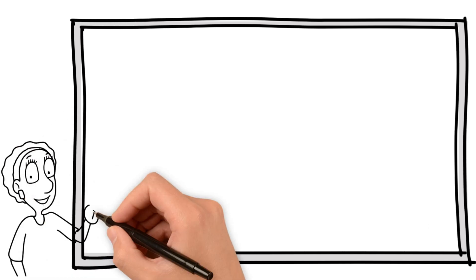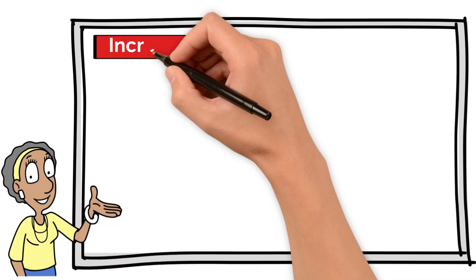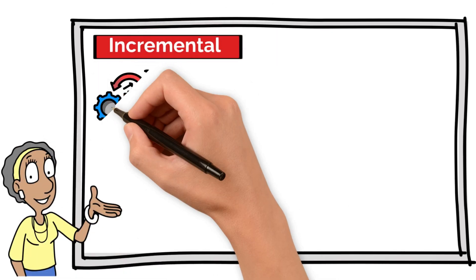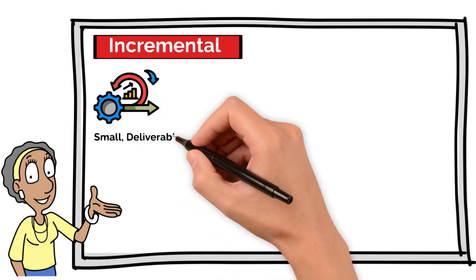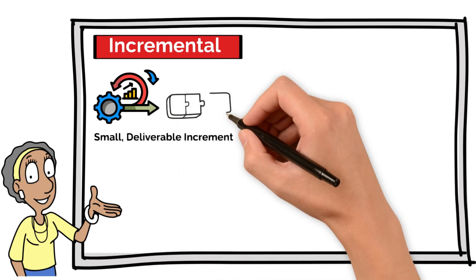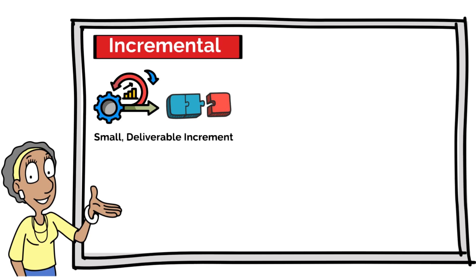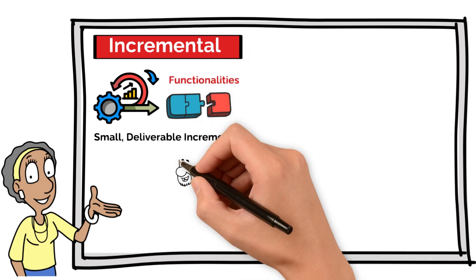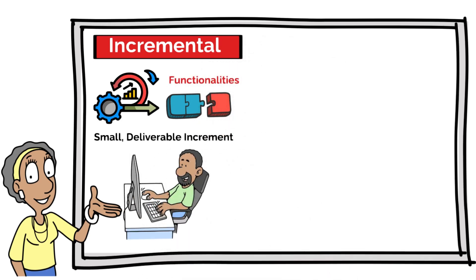Alright, first things first, let's define what each of these models is all about. With the incremental model, the project is divided into smaller, deliverable pieces called increments. Each one adds a fully functional piece to the final product, so as you progress, each increment brings additional functionality that stakeholders can actually use.